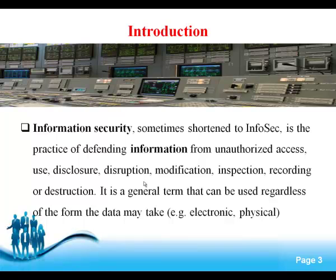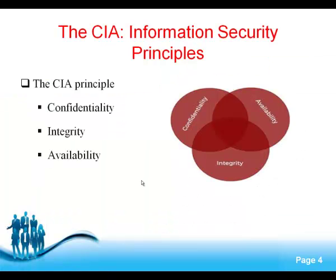Information security involves systems designed and embedded which we just have to activate. It is a general term that can be used regardless of the form data may take — either electronic data or physical data on paper. The next topic is the CIA principles. What is the CIA? It is based on three things: confidentiality, integrity, and availability.